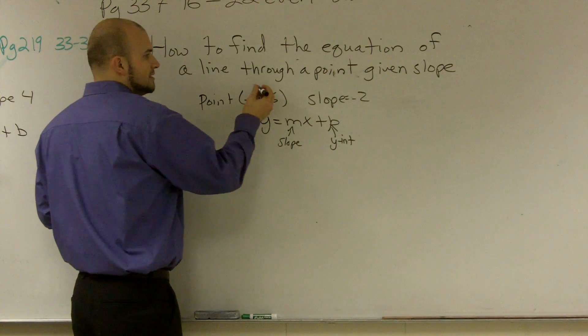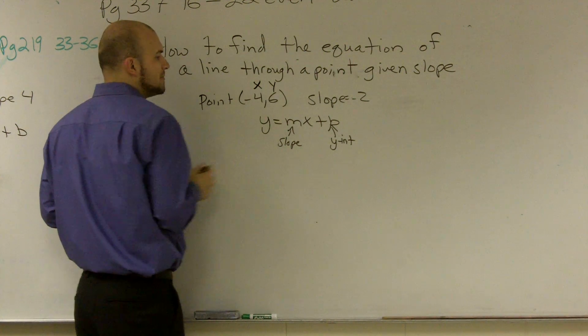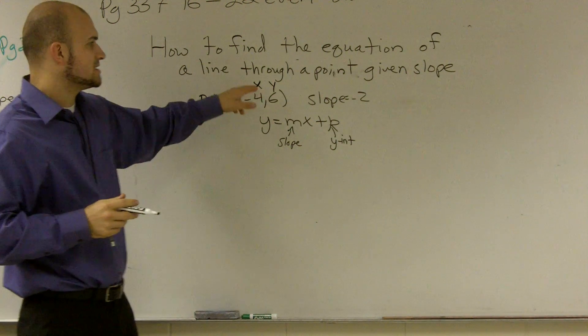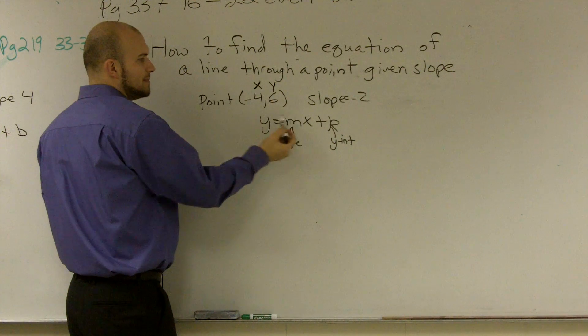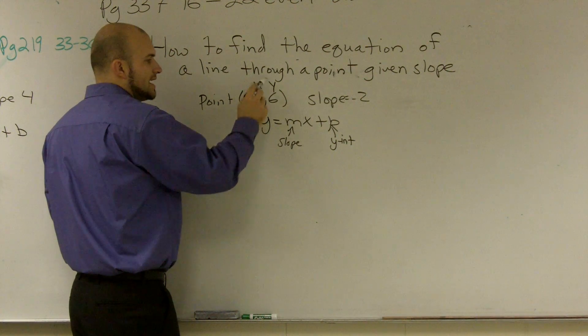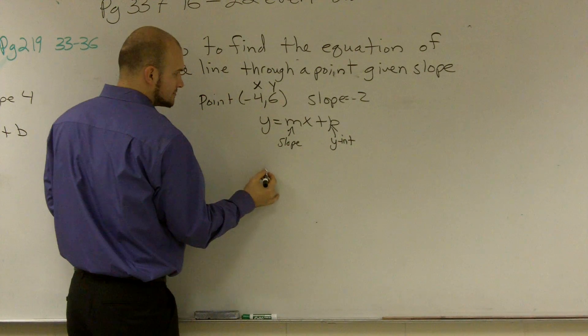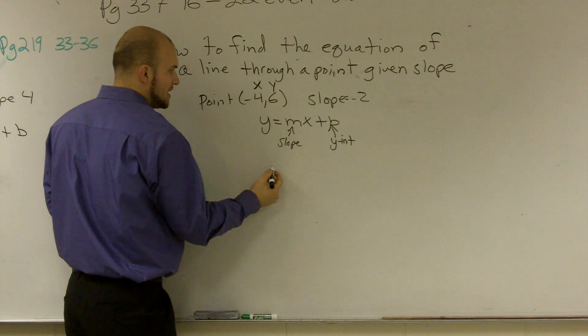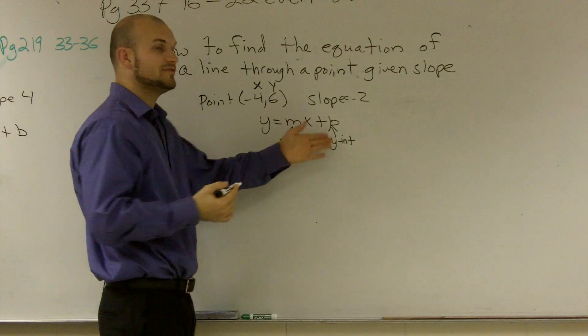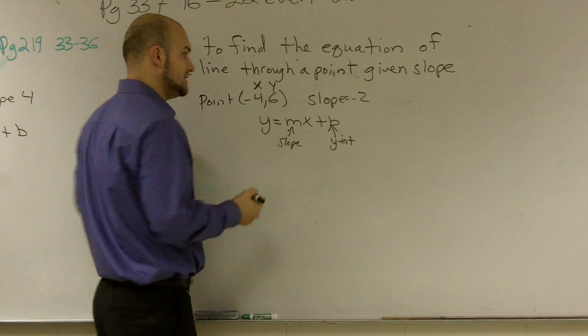And remember, a point has coordinate pairs x and y. So I can plug in my point negative 4 in for x and 6 in for y. I know my slope is negative 2, so I'll plug in negative 2 in for m. And now I do not know what b is. And remember, I'm going to have to figure out what b is to make this equation equal.